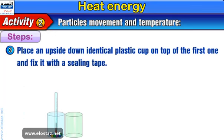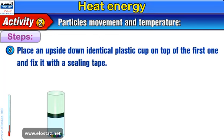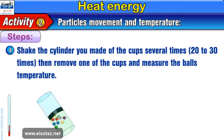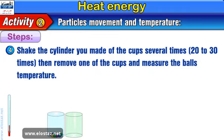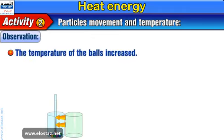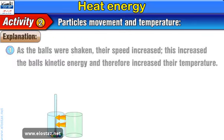3: Place an upside-down identical plastic cup on top of the first one and fix it with a sealing tape. 4: Shake the cylinder you made of the cups several times, 20 to 30 times. Then remove one of the cups and measure the ball's temperature. What do you observe? The temperature of the balls increased.